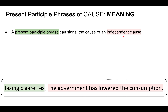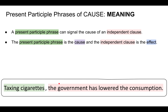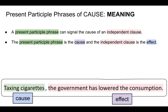For example, taxing cigarettes, the government has lowered consumption. So this is signaling that this is the cause of this. The present participle phrase is the cause and the independent clause is the effect. Taxing cigarettes — that's our cause. The government has lowered consumption — that is the effect.